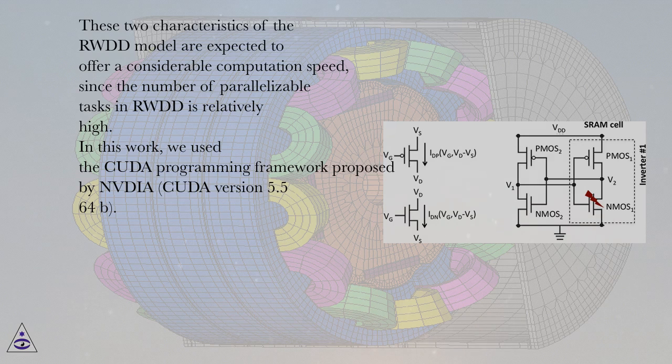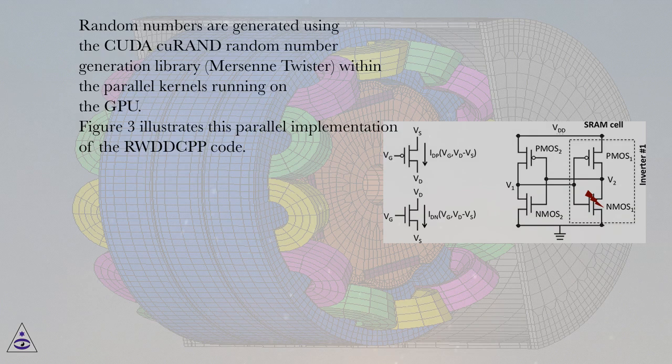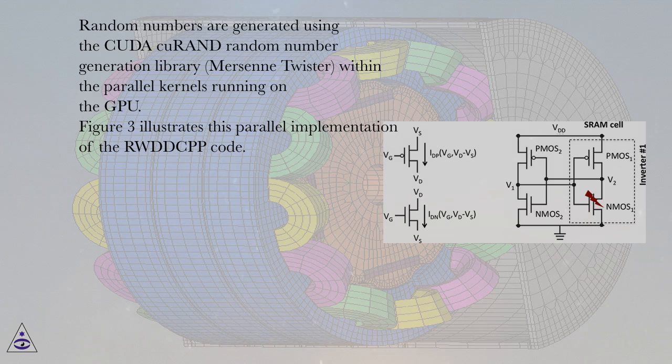In this work, we use the CUDA programming framework proposed by NVIDIA, CUDA version 5.564b. Random numbers are generated using the CUDA current random number generation library, Mersenne Twister, within the parallel kernels running on the GPU.